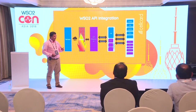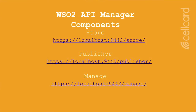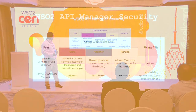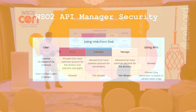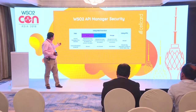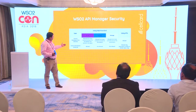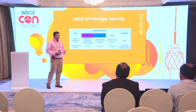The WSO2 API Manager has three important components: Store, Publisher, and Manager. Regarding security, these three components are built into WSO2. We can set that for internal developers or our value-added service platform, we allow access to specific interfaces, and for external developers we allow access to different interfaces. This is the key security benefit the WSO2 API Manager provides.